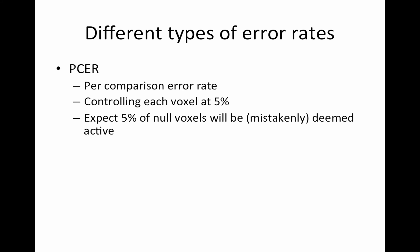PCER controls the false positive rate of each voxel at 5%. This goes back to the bag-of-voxels approach — we analyze each voxel independently and compute its p-value independent of its neighbors. This isn't necessarily what we want to do because we're ignoring the fact that our data are in an image.